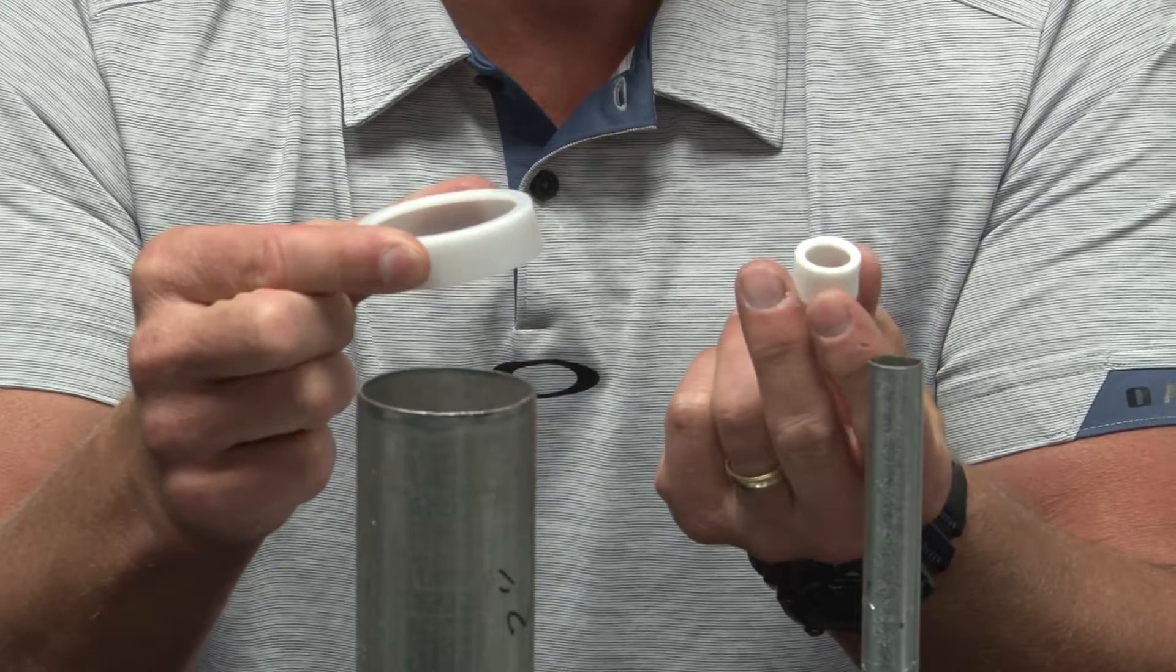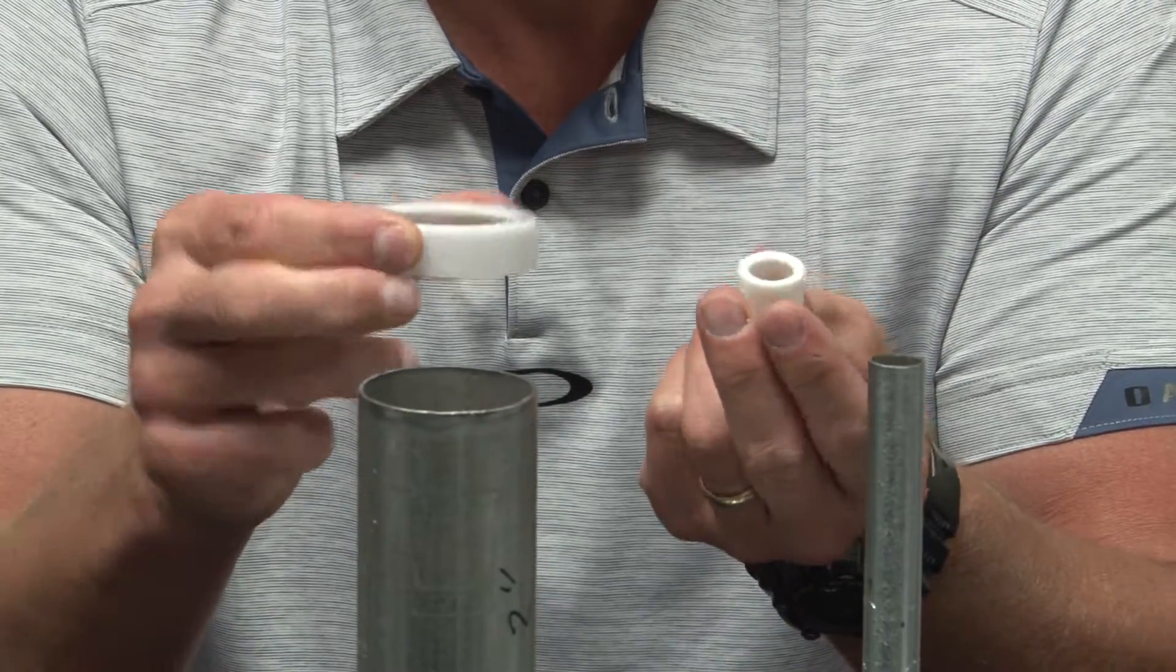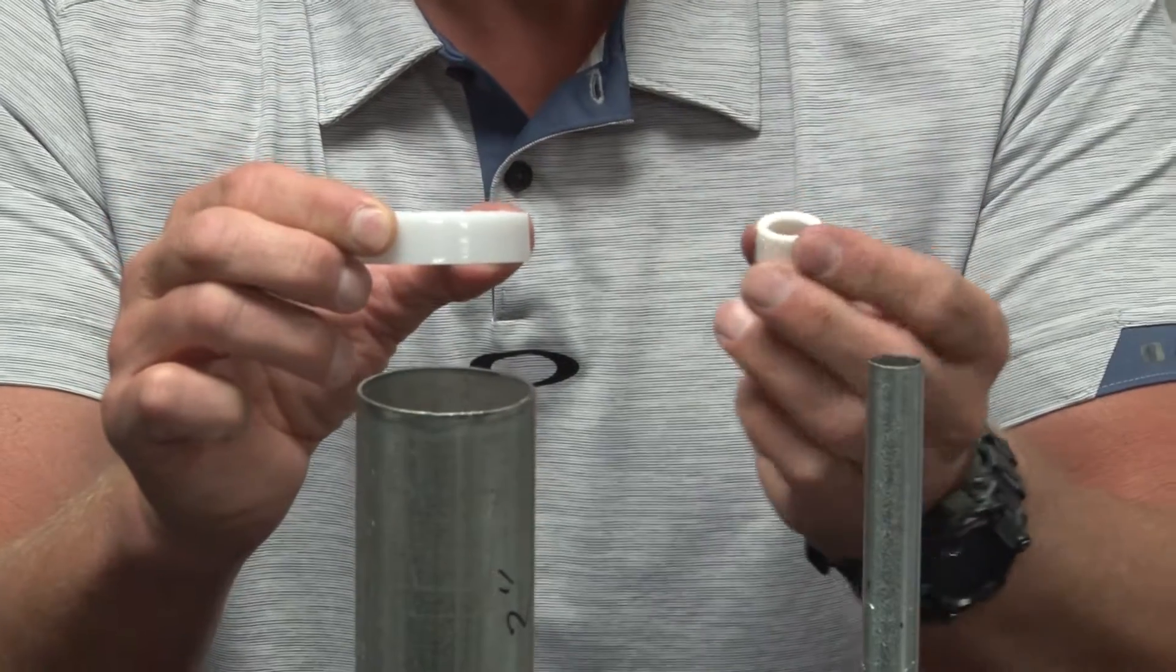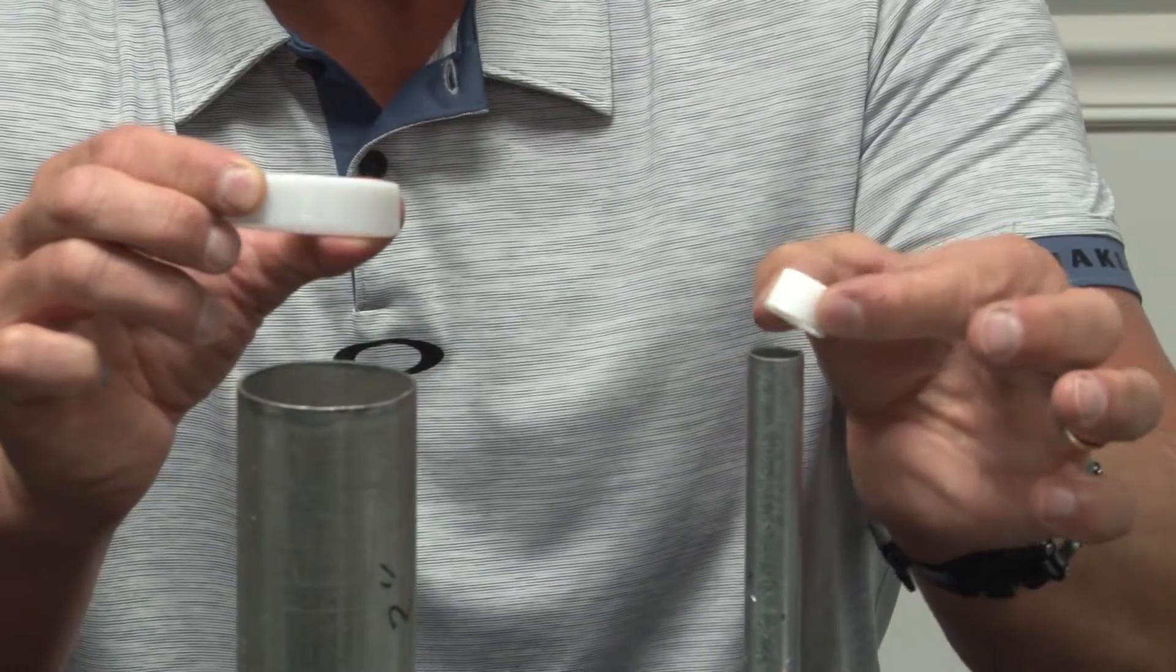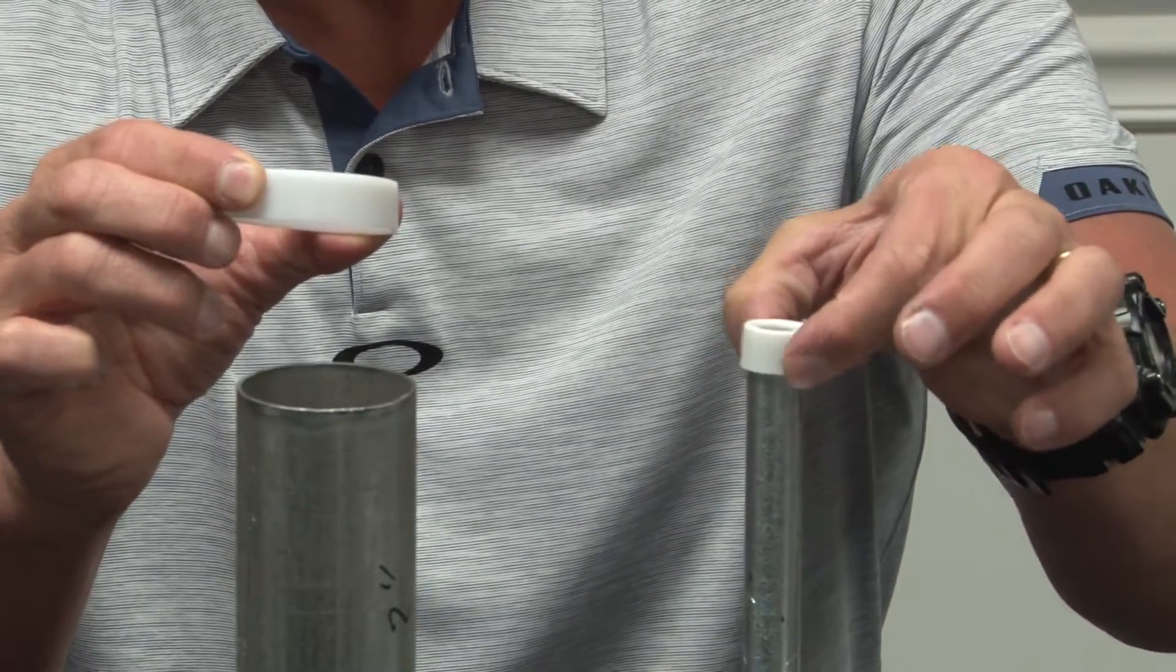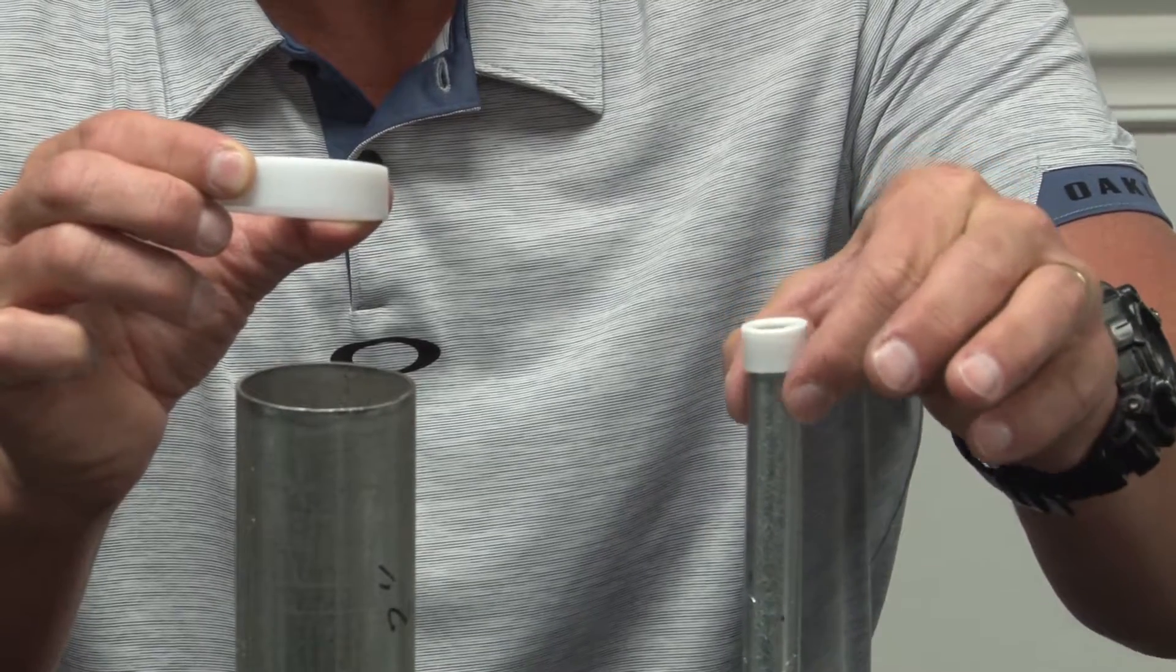These come in sizes half inch through four inch and are made from flexible plastic. The unique design allows them to be placed right over the sharp edge and simply banged on with your hand.